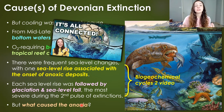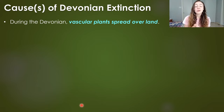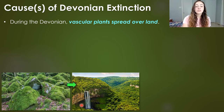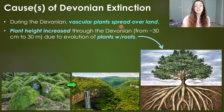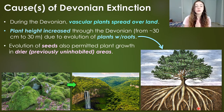What caused the anoxia or oxygen depletion in the oceans during the Devonian? Land plants had a lot to do with it. During the Devonian, vascular plants spread over land and increased in height from around 30 centimeters at the beginning to around 30 meters near the end, due to the evolution of deeper roots. The evolution of seeds also helped spread these plants throughout previously uninhabited areas, allowing them to inhabit drier regions.